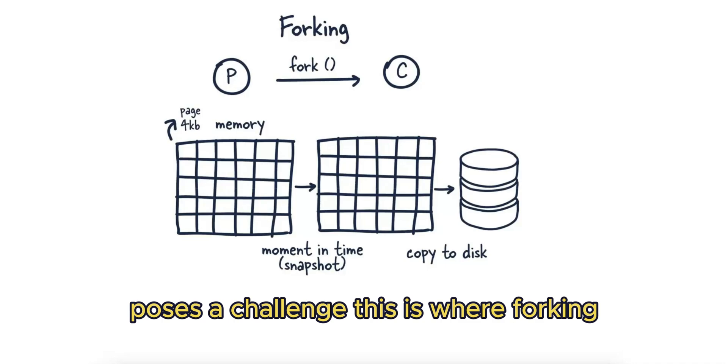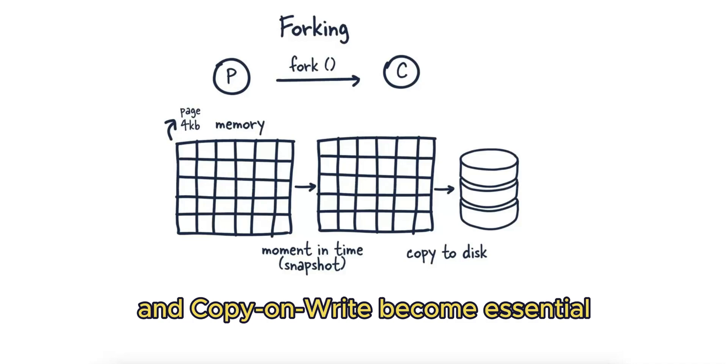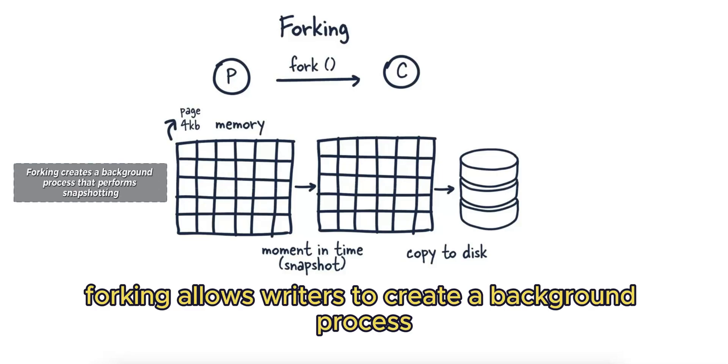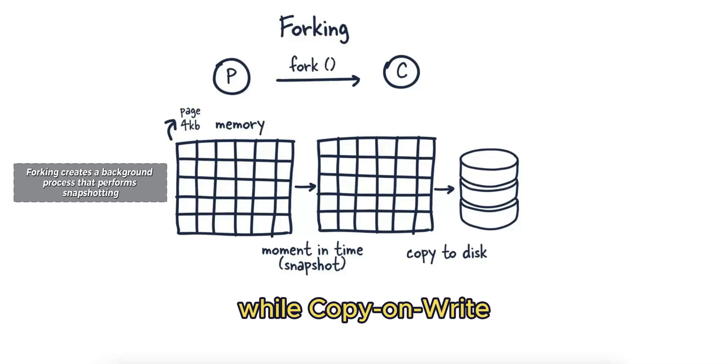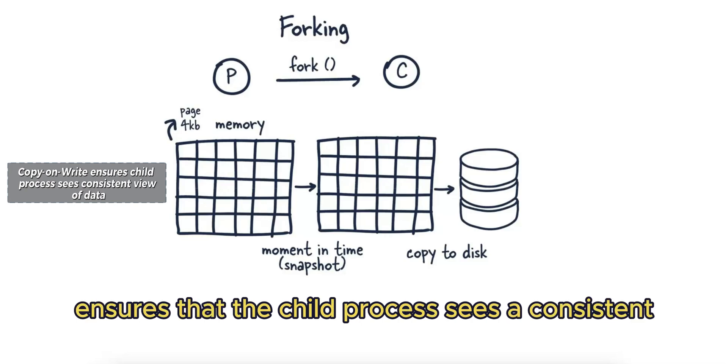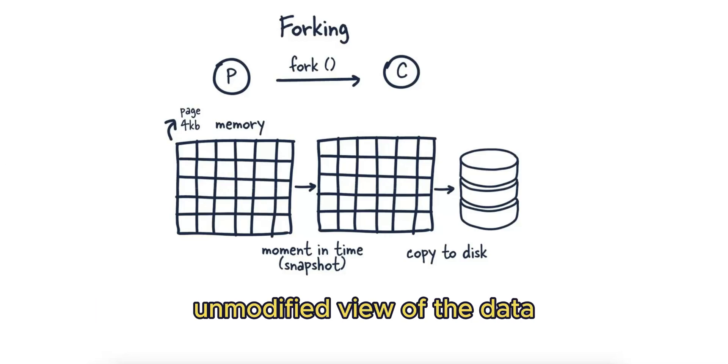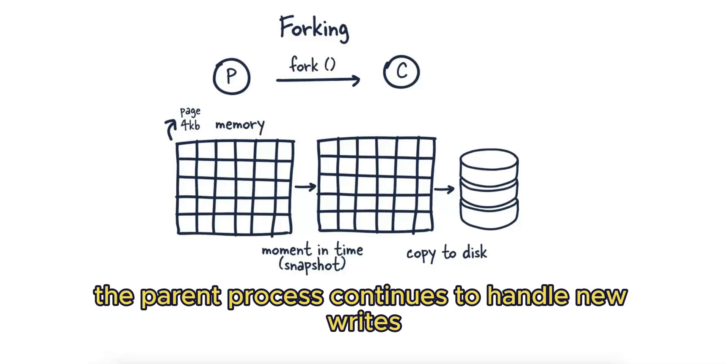This is where forking and copy-on-write become essential. Forking allows Redis to create a background process that performs snapshotting, while copy-on-write ensures that the child process sees a consistent, unmodified view of the data even as the parent process continues to handle new writes.